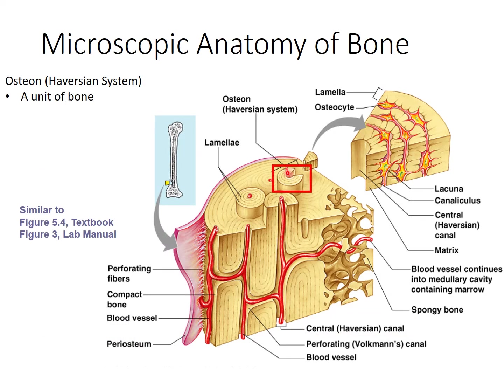This central canal and those concentric circles form a unit of bone called an osteon, or a Haversian system. The preferred term would be osteon — it's just a unit of bone. Here's an osteon here, here's an osteon here, and here, and here.